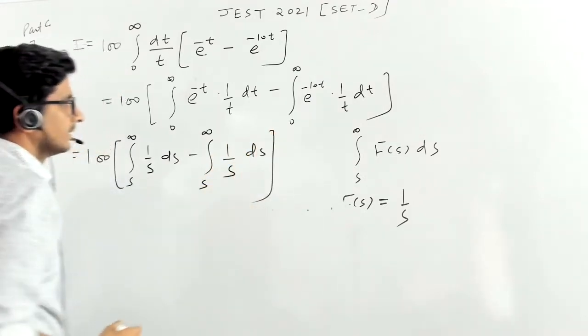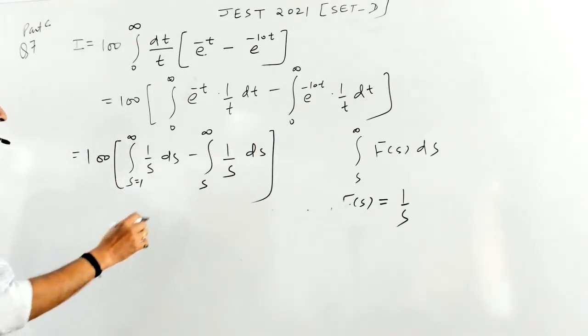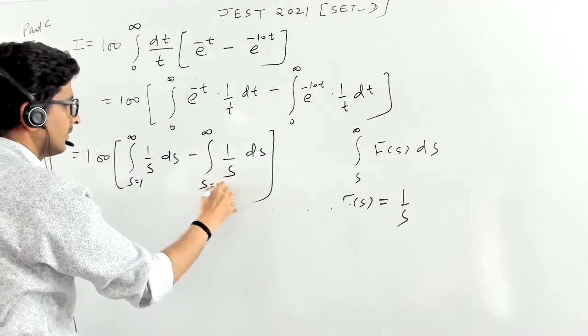So this will become the limit. What is the value of s here? s is equal to one. And what is the value of s in this case? s is equal to 10.